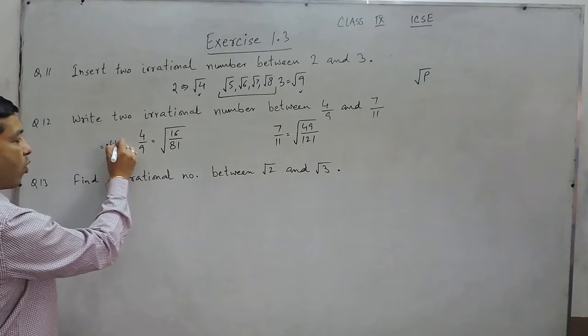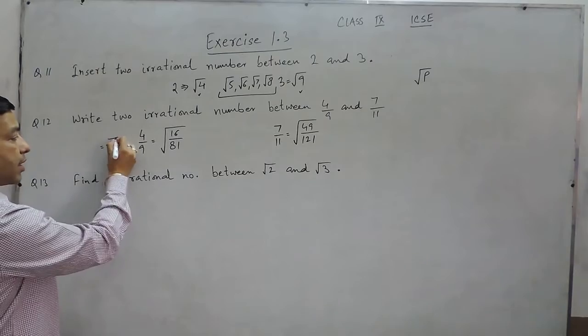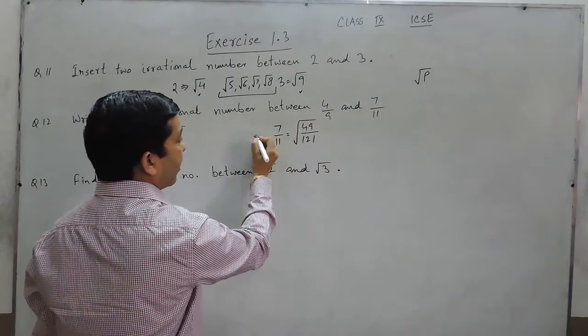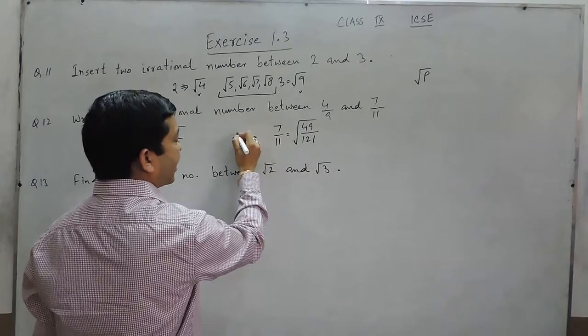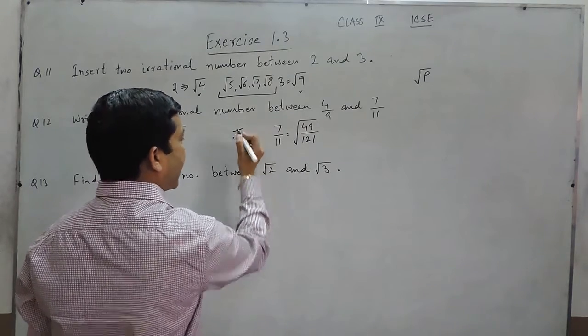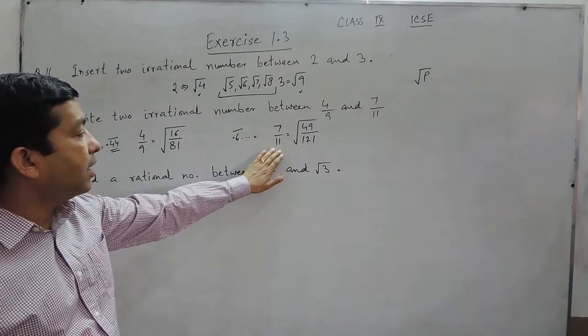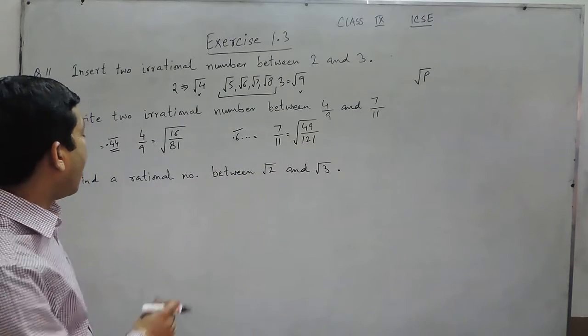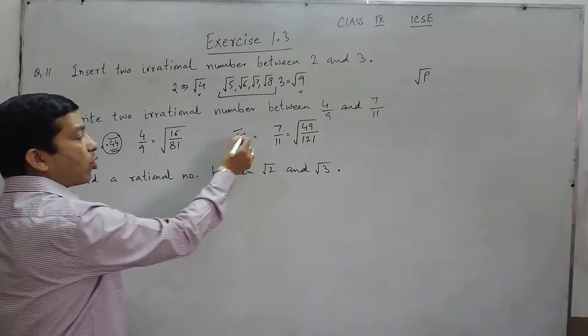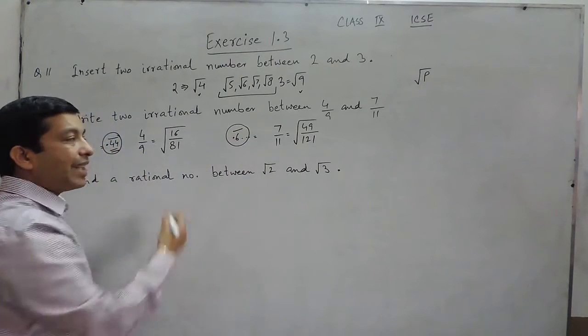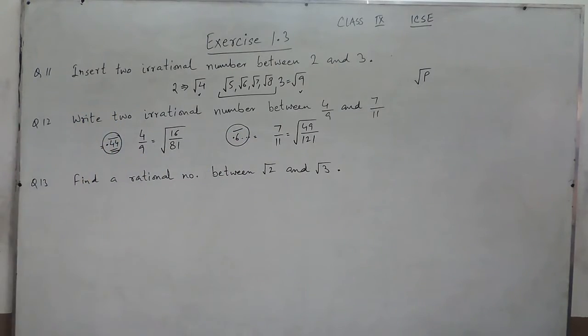Now first of all we have to understand that 4 upon 9 is approximately 0.44 and this is with a bar. While 7 upon 11 is approximately 0.6 something, but it must be having a bar because this is a non-terminating, repeating decimal. Now we understand that from 0.4 to 0.6, all the numbers in between which are not the perfect squares are known as irrational numbers.